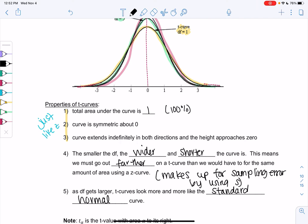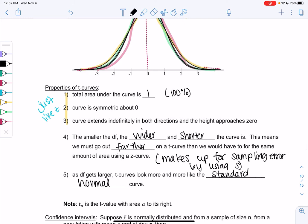T sub α, this little fish thing, is the T value with area α to its right. We probably saw that on the table last time. Maybe you saw T like 0.05 on that table. We'll get into that in a second.